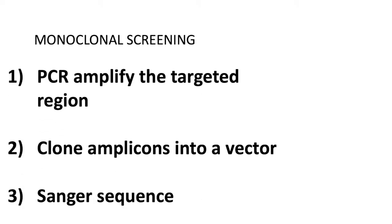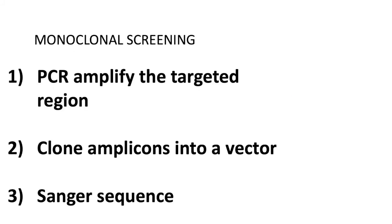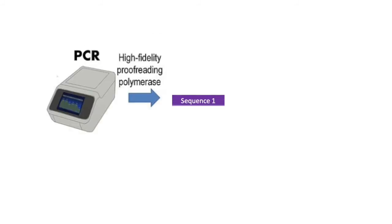You're going to PCR amplify the targeted region as you did for the polyclonal screening. But this time, you're going to clone the amplicons that you get from the PCR into a vector. You do this so that you will have each vector containing only one gene. And in this way, when you get your read back from the Sanger sequencing, you will have a clean trace instead of the overlapping traces.